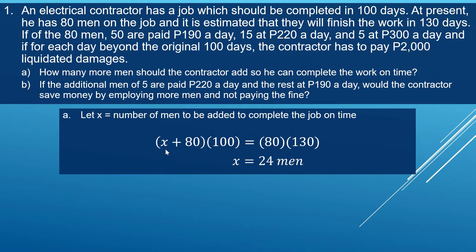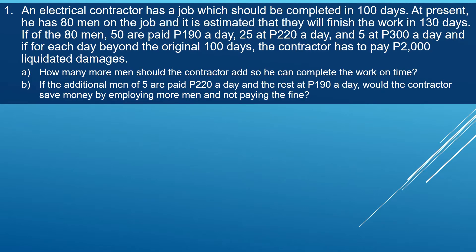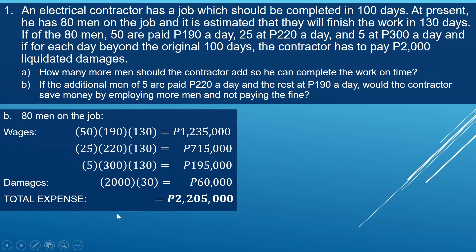For letter B, we compute the total expenses by comparing two scenarios: 80 men on the job working 130 days versus 104 men (80 plus 24) working within 100 days. First, we compute all the expenses for 80 men on the job within 130 days.